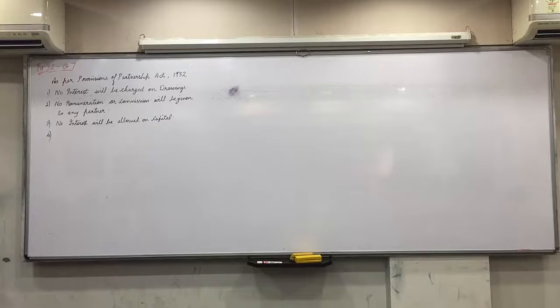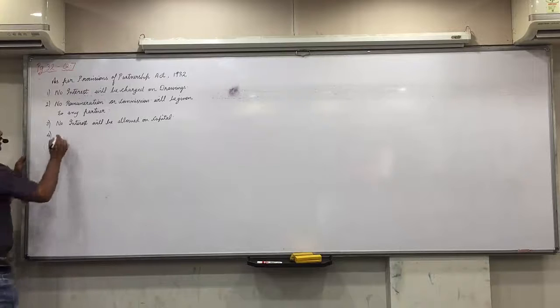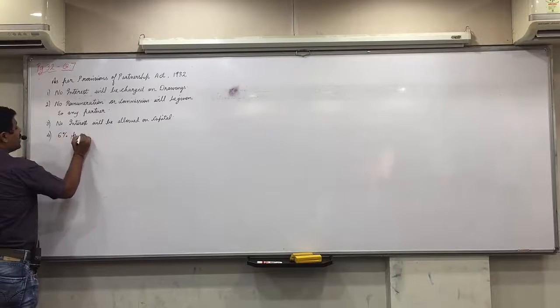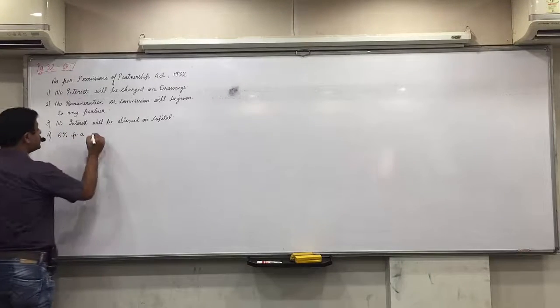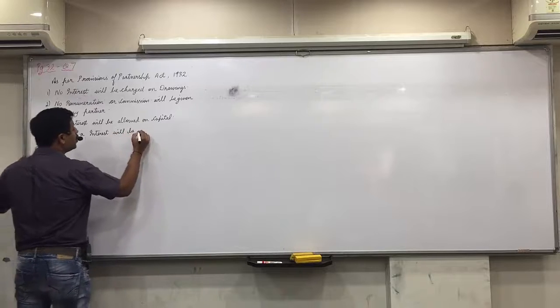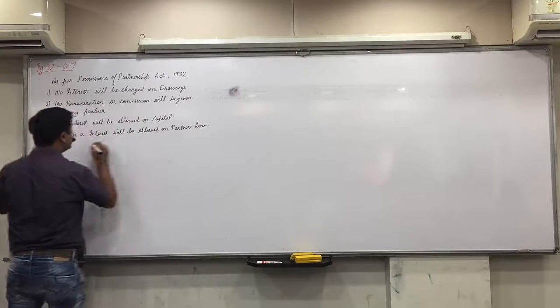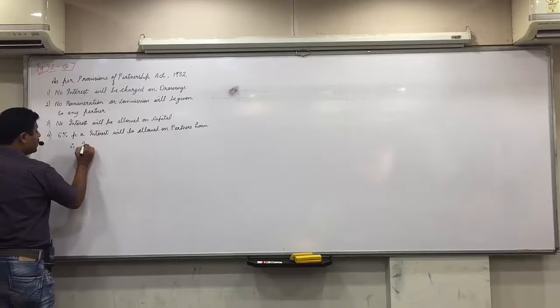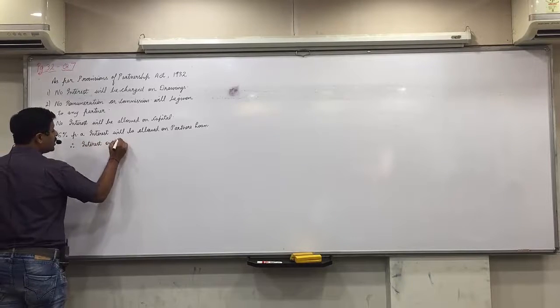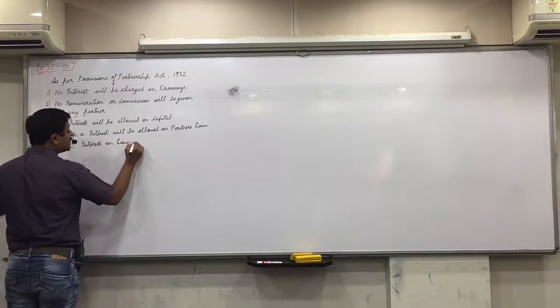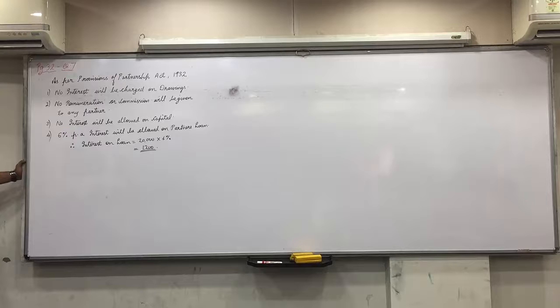Fourth, X has lent a loan of at least 20,000 to the firm. Partner has given a loan. He demands interest on loan. Yes. How much? 6%. Around 6% per annum interest will be allowed on partner's loan. Therefore, interest on loan will be equal to 20,000, the loan amount, so 20,000 into 6% per annum interest. Is everyone clear with this? Any doubts up till here?